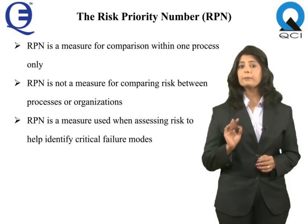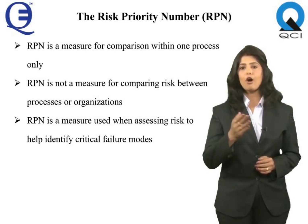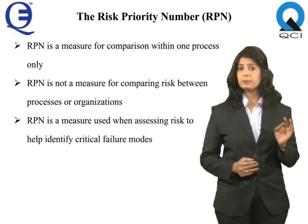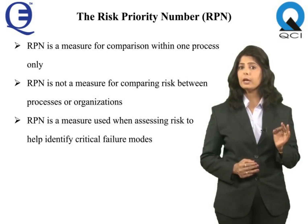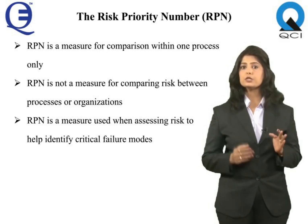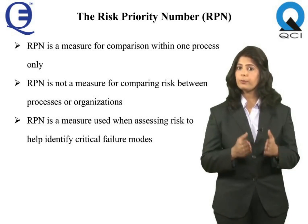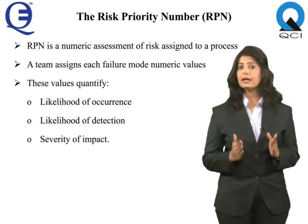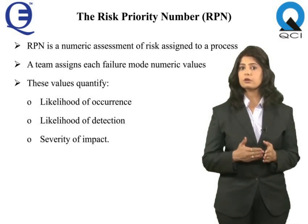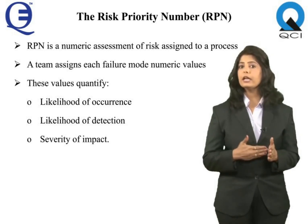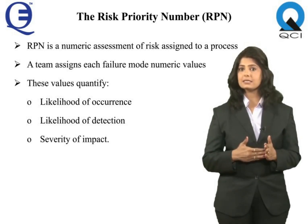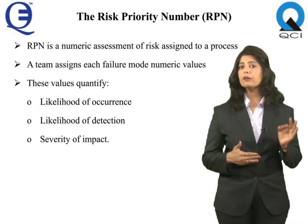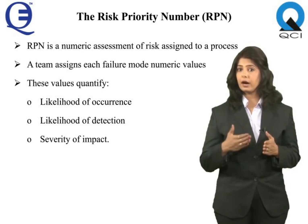The RPN is not a measure for comparing risk between processes or organizations. The risk priority number is a measure used when assessing risk to help identify critical failure modes associated with your design or process. The RPN is a numeric assessment of risk assigned to a process or steps in a process as part of failure modes and effects analysis, FMEA, in which a team assigns each failure mode numeric values that quantify likelihood of occurrence.